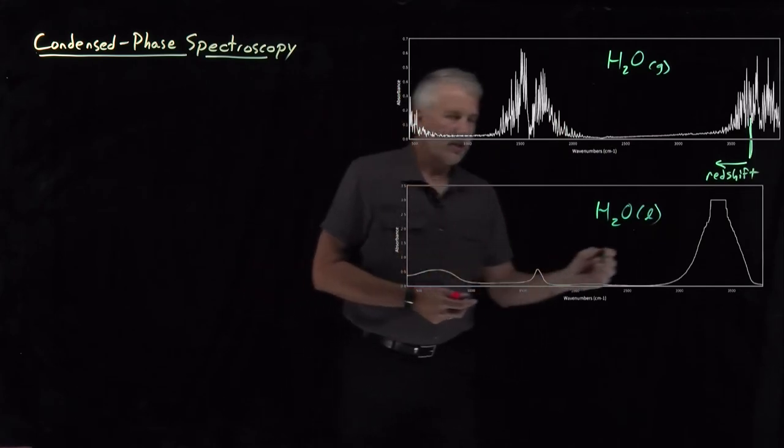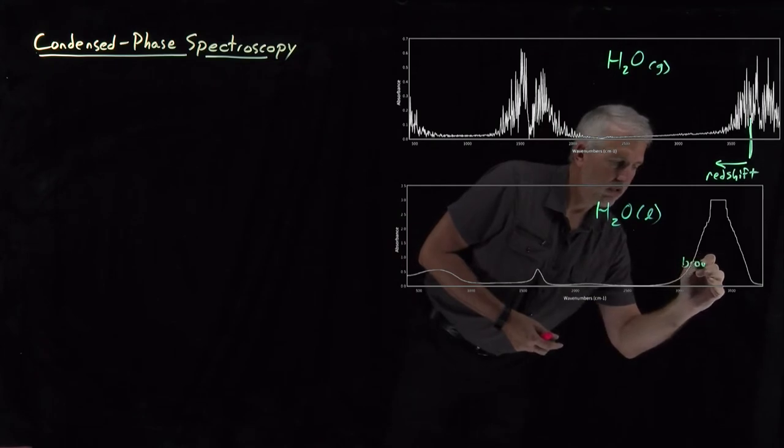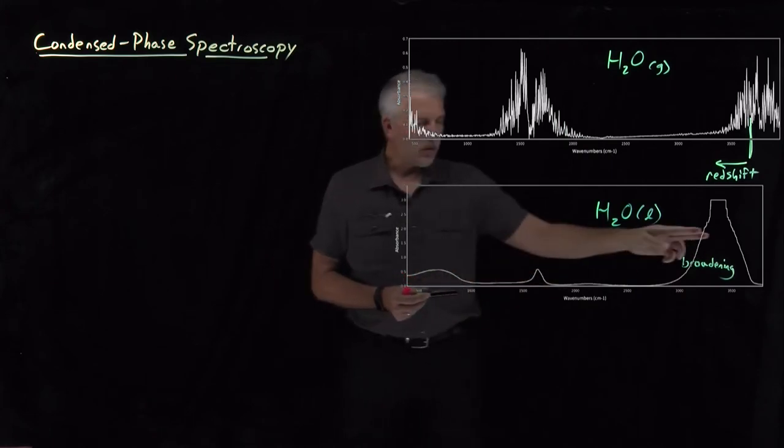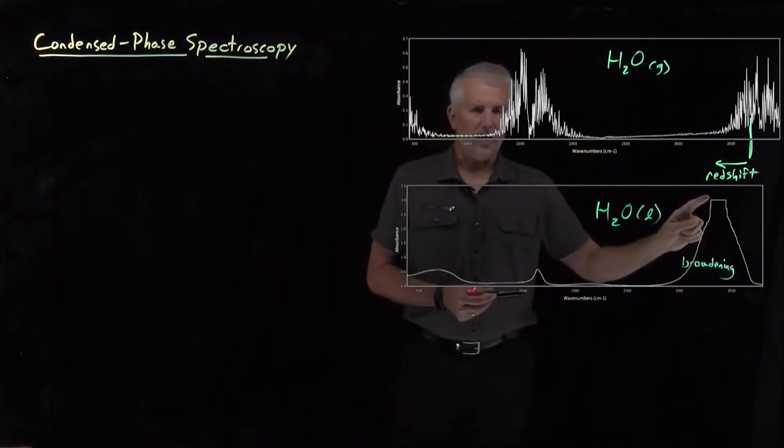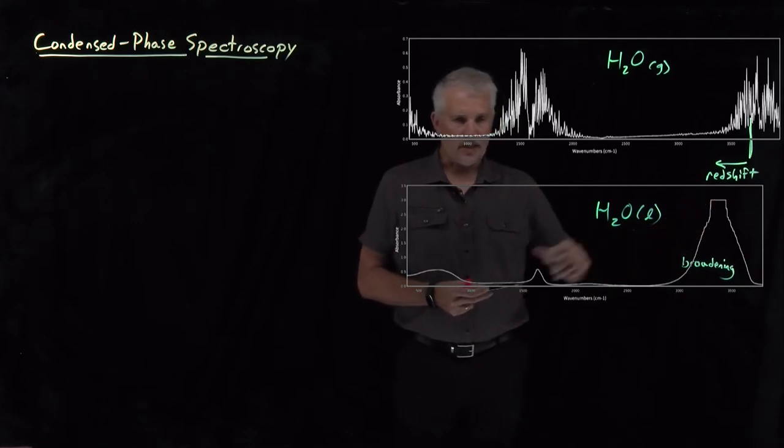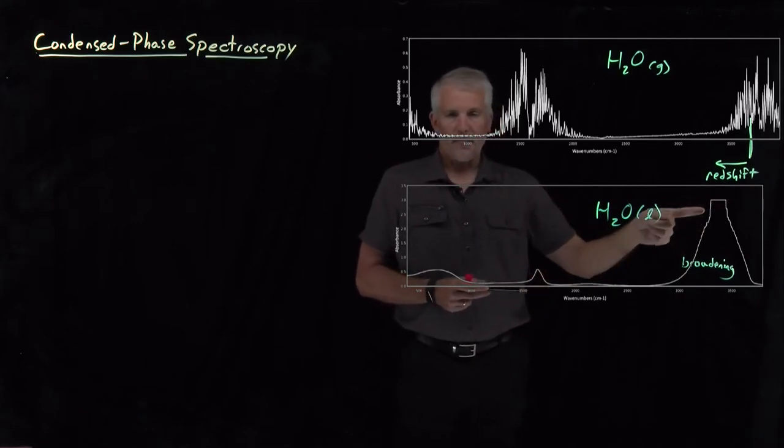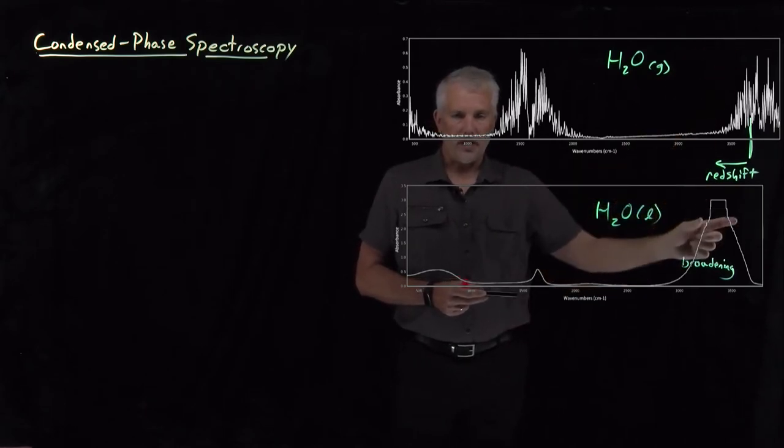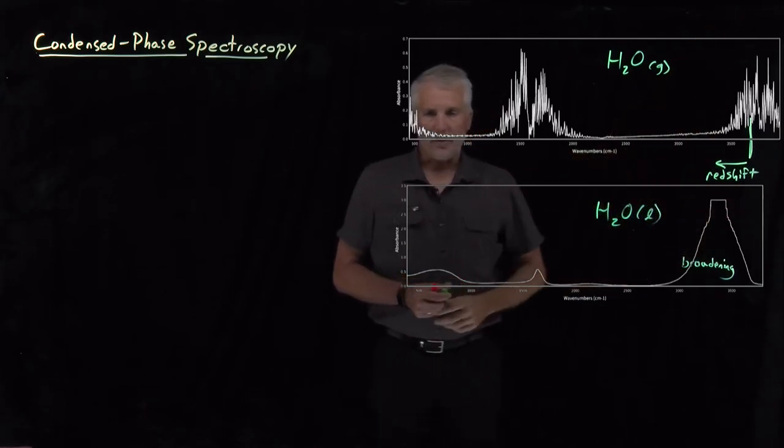We also get this broadening of the line spectra into these wider band spectra. While we're talking about this peak, I should point out that this flat top on the top of the spectrum isn't actually a flat top. That just indicates that the absorbance was only measured up to this value. In fact, this is a very, very large peak that goes off the scale of the graph.